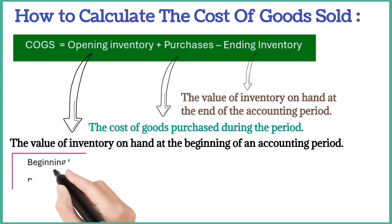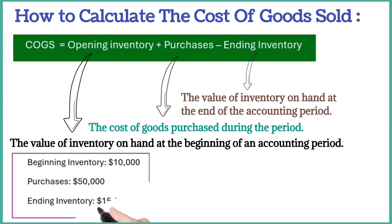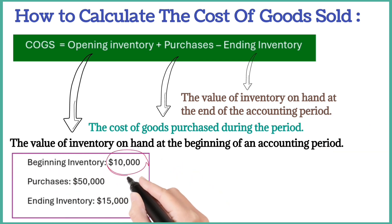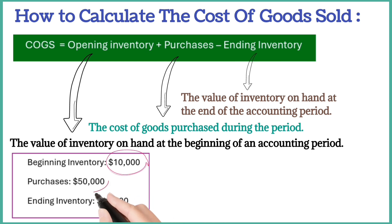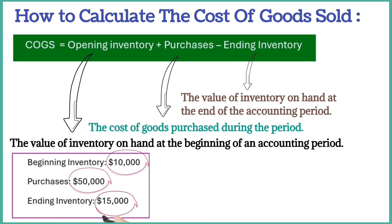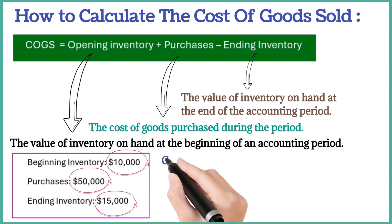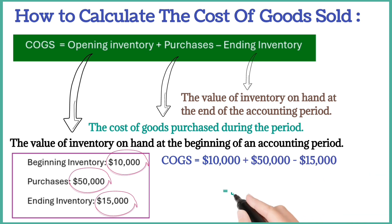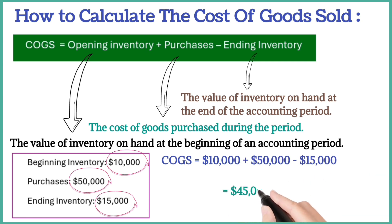Let's assume a company has the following information: beginning inventory $10,000, purchases $50,000, and ending inventory $15,000. Using the formula, the cost of goods sold is $45,000.